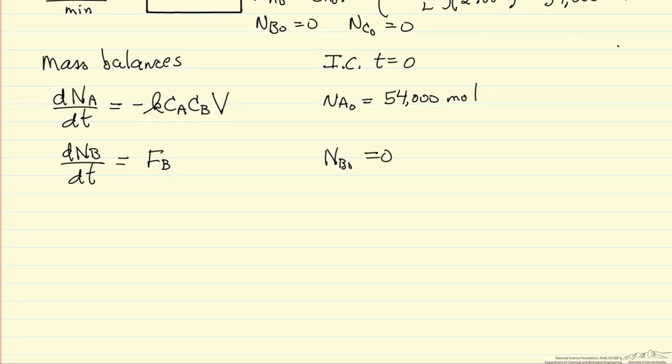Now we want the mass balance for C. The change in the number of moles of C with respect to time is the rate that A is reacting. One mole of A makes one mole of C, this is a plus sign here. Initial conditions are also equal to 0.